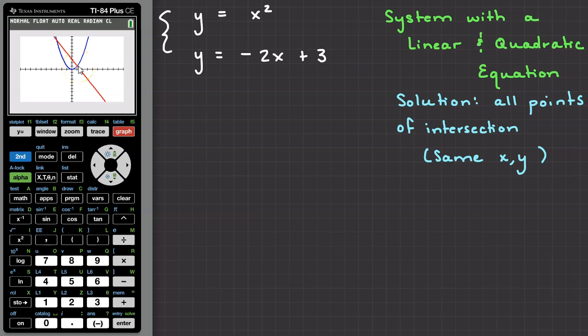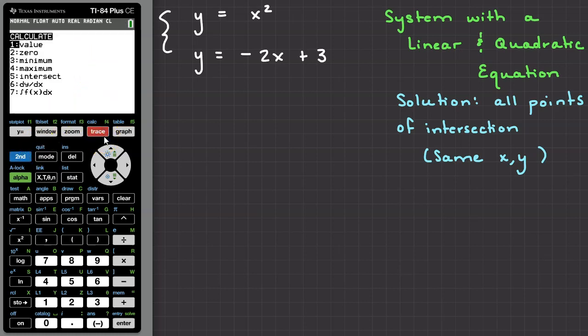Let's find those points exactly, this time without using the table of values. I'm going to hit second, trace on my calculator, and select option number 5 to calculate the point of intersect.